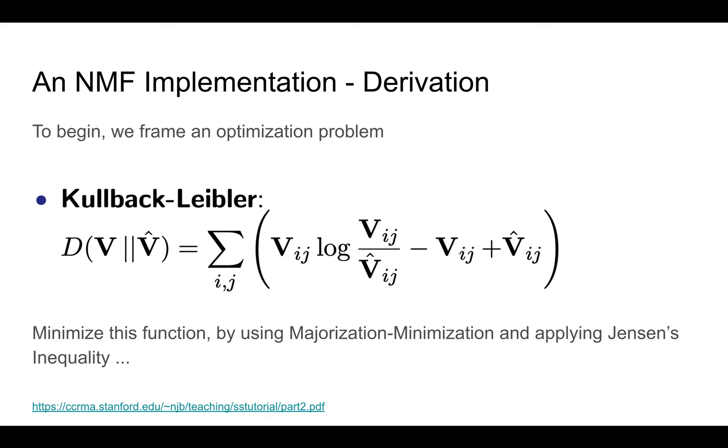And what you do is you minimize this Kullback-Leibler function in order to actually create a good approximation, right? And the way you minimize this is by using majorization minimization and applying Jensen's inequality. And if that doesn't make any sense to you, that's quite all right. And it shouldn't. If it does, then congratulations. That's quite impressive and you've got a really good memory, or maybe you're in a math class right now.